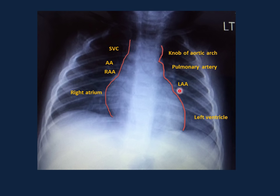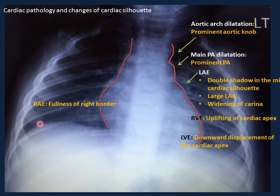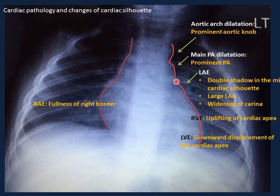Using a normal chest x-ray of a 9-month-old to summarize cardiac pathology: aortic arch dilatation appears as a prominent aortic nub (example: aortic stenosis with post-stenotic dilatation). Main pulmonary artery dilatation appears as a prominent pulmonary trunk — classic example is left-to-right shunt congenital heart defect. Left atrial enlargement presents as a convex left atrial appendage instead of being concave.